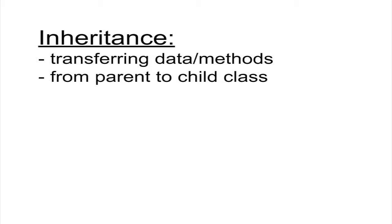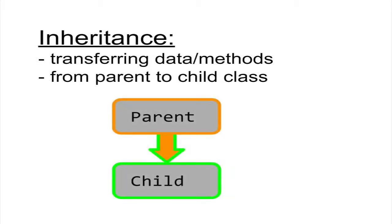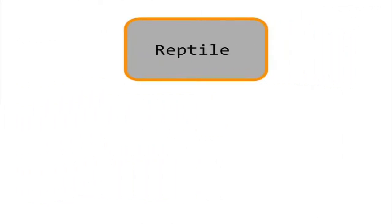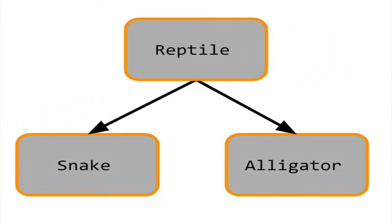Inheritance is the process of passing the attributes and behaviors of one class down to descendant classes. For example, you can start with a class like reptile and have its descendants be snake and alligator. Although snake and alligator have different attributes and behaviors, both classes are derived from the same reptile class.